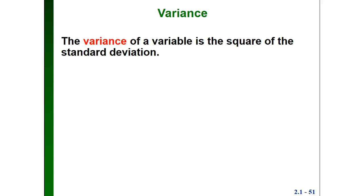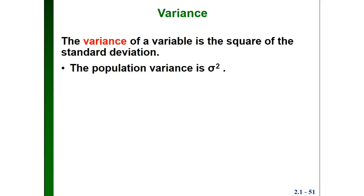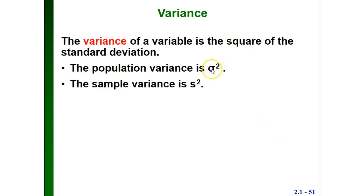One more measure of variation is called the variance, which is just the square of the standard deviation. The symbol for the population variance is sigma squared, and for the sample variance it's s squared. In each case, we're simply taking the standard deviation and squaring it.